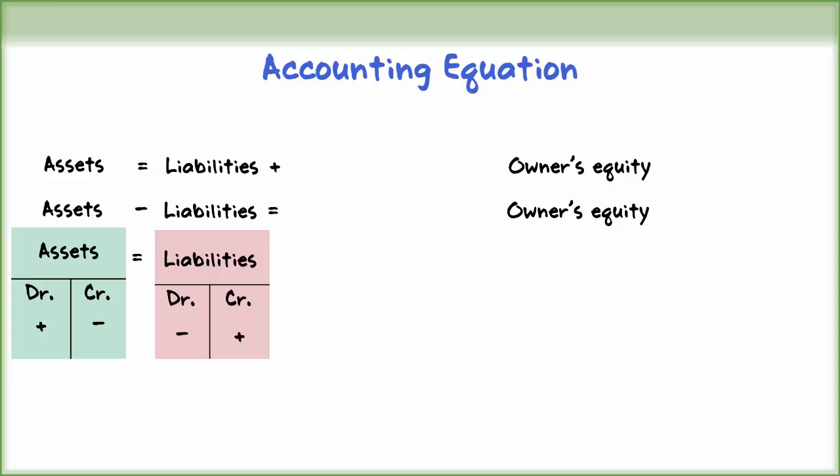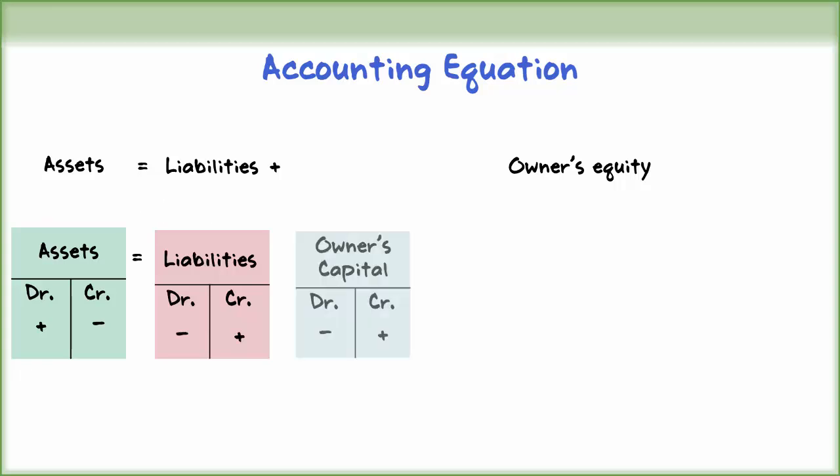In a business, owners' investments and revenues increase owners' equity. Both owners' capital and revenue have a normal credit balance.